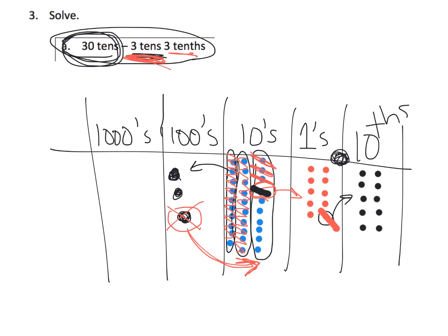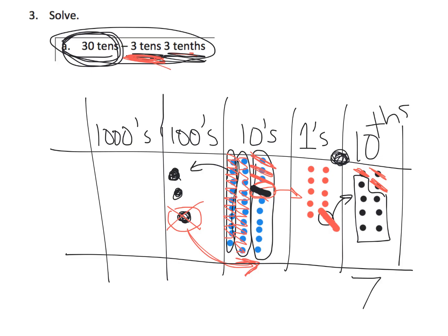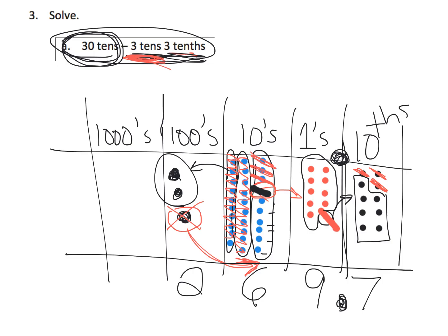Now we're finally able to subtract three tenths: one, two, three. Looking at our final answer — in the tenths column we have seven, in the ones column we have nine, in the tens column we have six, and in the hundreds column we have two. The decimal is right here. So our answer is 269 and seven tenths.